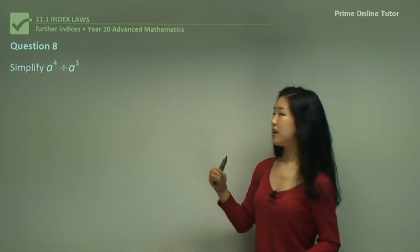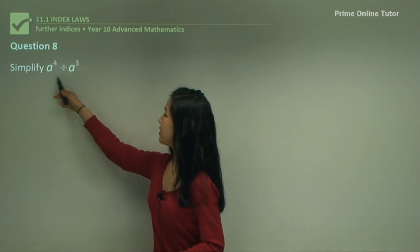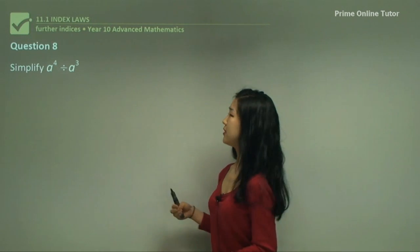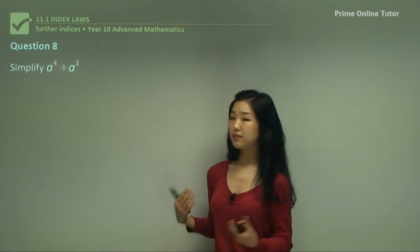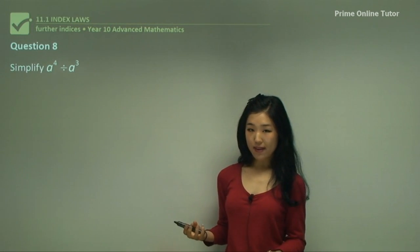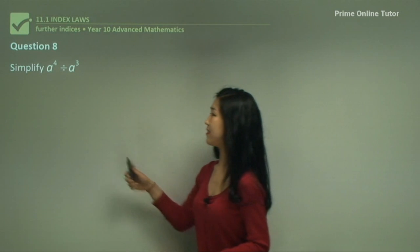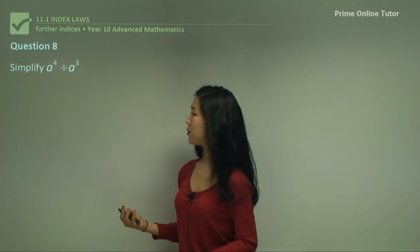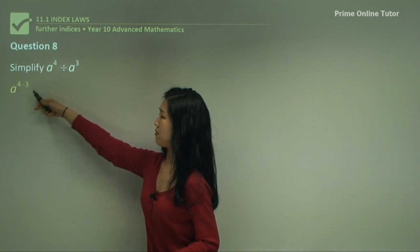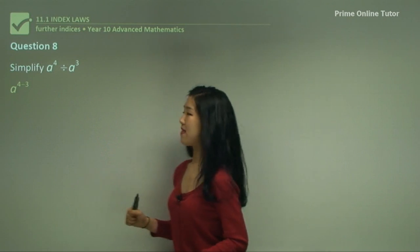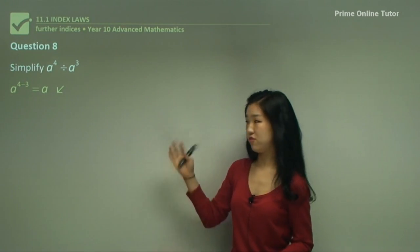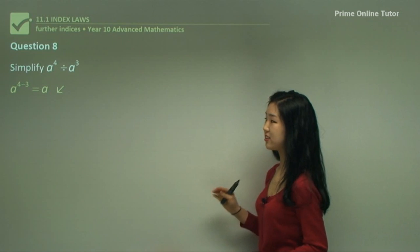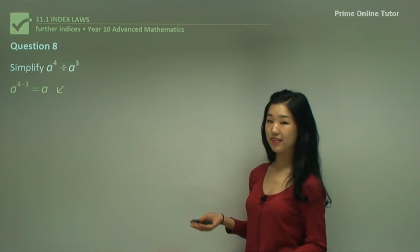Now onto some division. We're dividing a to the power of 4 by a to the power of 3. When we're dividing, as long as you have the same base, we simply subtract the indices. So we subtract 3 from 4 and get a to the power of 1, which is just a. It's very easy — the only difference is we're subtracting.